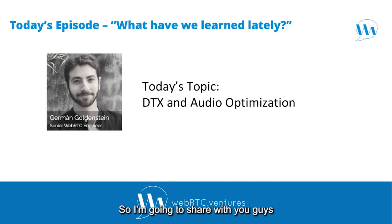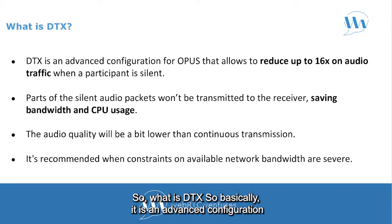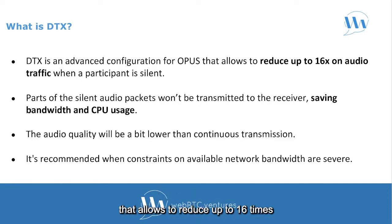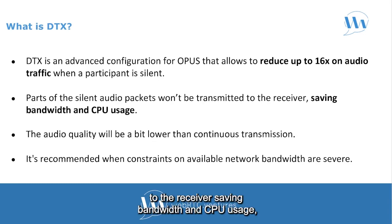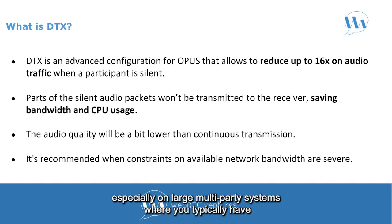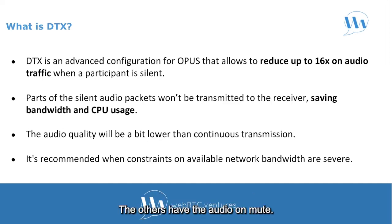Thank you, Aaron. I'm going to share with you guys one thing that I have recently learned, which is discontinuous transmission, or DTX. So what is DTX? Basically, it is an advanced configuration for the Opus audio codec that allows reducing up to 16 times the audio traffic when a participant is silent. When DTX is enabled, silent audio packets won't be transmitted to the receiver, saving bandwidth and CPU usage — especially on large multi-party sessions where you typically have a small number of participants talking and the rest have their audio on mute.